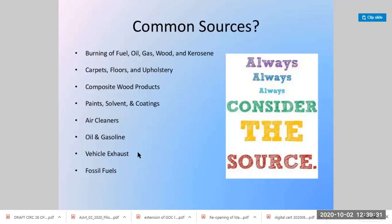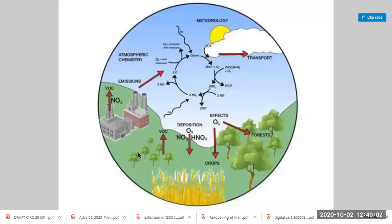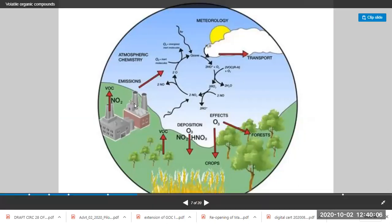VOCs are released when making carpets, floors, upholstery, and wood products. Burning of paints, solvents, coatings, air cleaners, oil and gasoline, vehicle exhaust, and fossil fuels all contribute. These compounds enter the atmosphere through emissions from refineries and factories, react in the atmosphere, and penetrate the ozone layer. Vegetation and crops also release VOCs due to applied chemicals and fertilizers, contributing to ozone layer depletion and global warming.